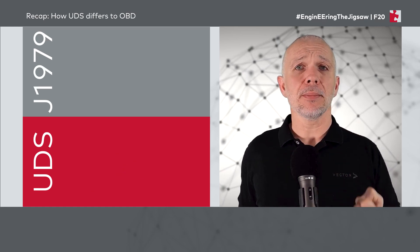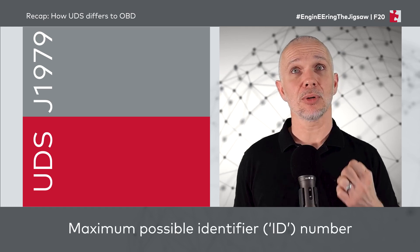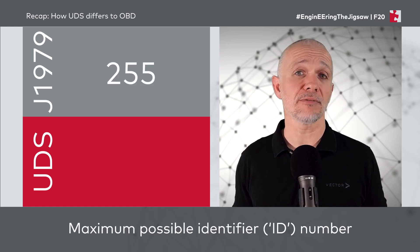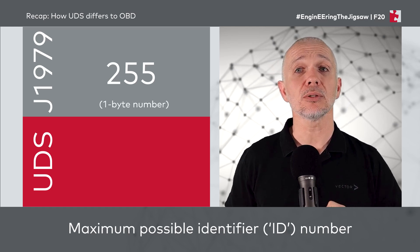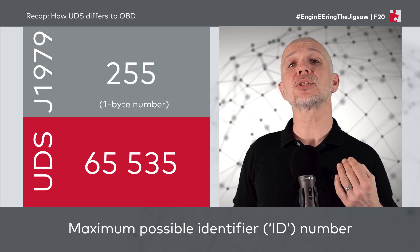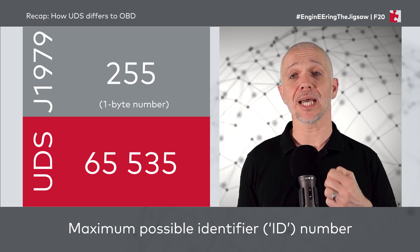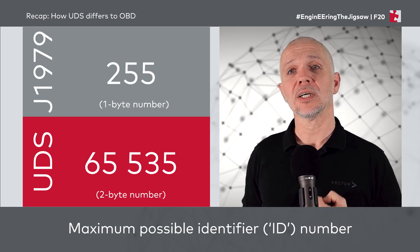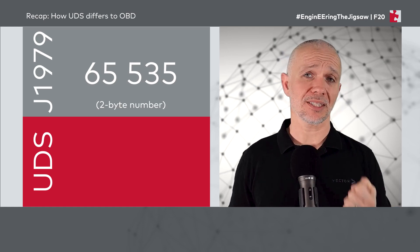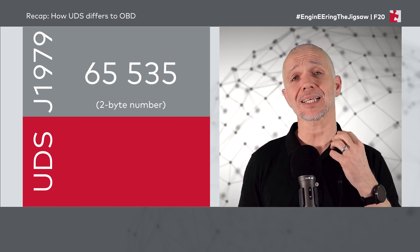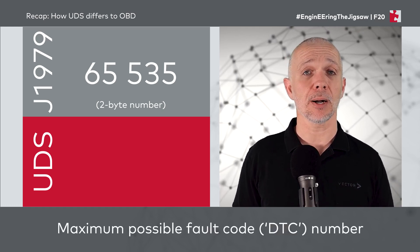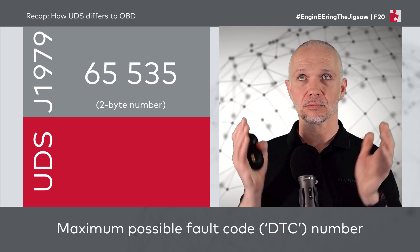Thinking about numbers — specifically the maximum possible number we can assign to an identifier — in J1979 that is 255, because J1979 uses single bytes to represent identifiers. In the case of UDS, the number goes up to 65,535 because UDS uses two bytes for identifiers. That two-byte maximum of 65,535 also applies as the maximum number assignable to a fault code or DTC number in the OBD context.